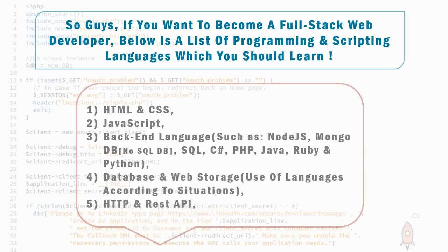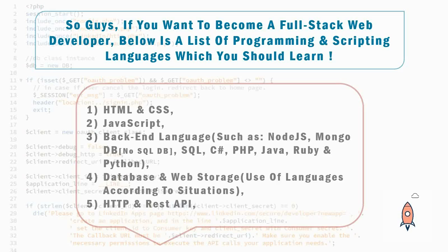If you want to become a full stack web developer, here is a list of programming and scripting languages you should learn: HTML and CSS, JavaScript, and back-end languages such as Node.js, MongoDB, SQL, C#, PHP, Java, Ruby, and Python. You should also learn databases and web storage, HTTP, and REST APIs. Mastery of both front-end and back-end languages is essential to becoming a full stack developer.